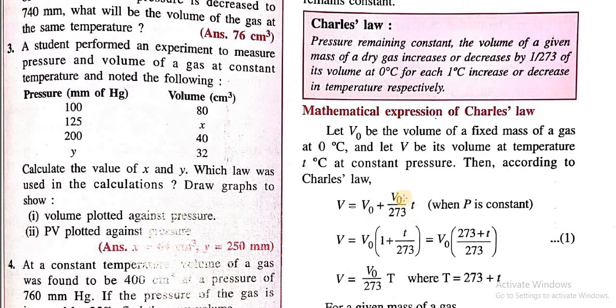Now, from this expression, we can take V₀ as common, so it will be 1 plus T/273. So when you simplify it, it becomes 273 plus T.